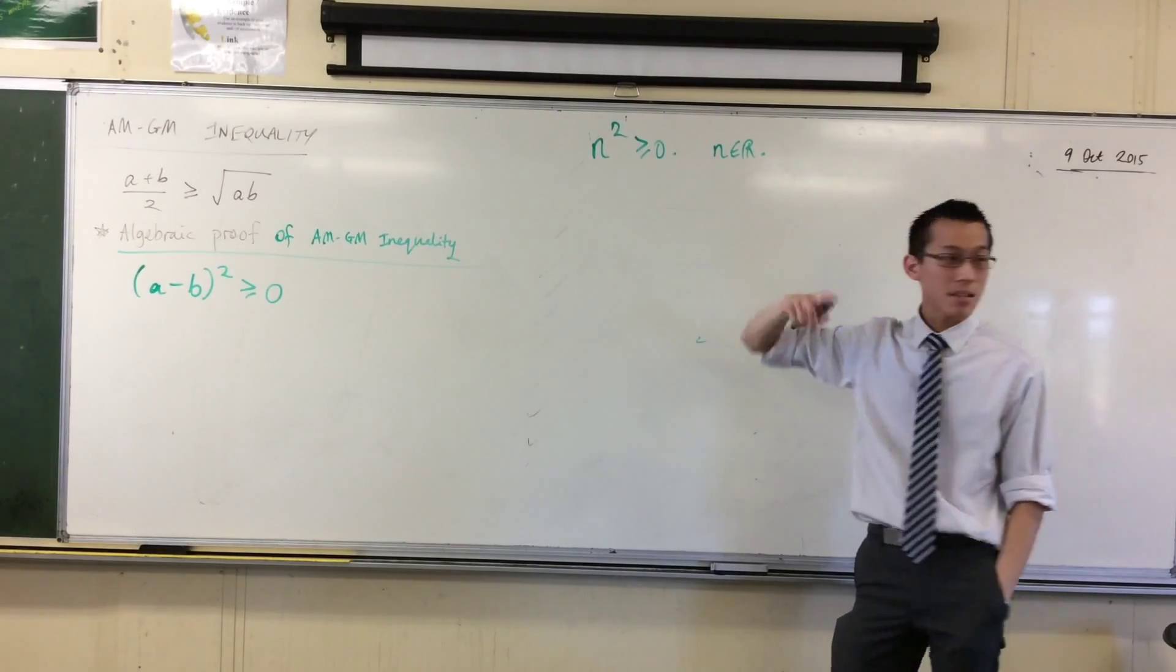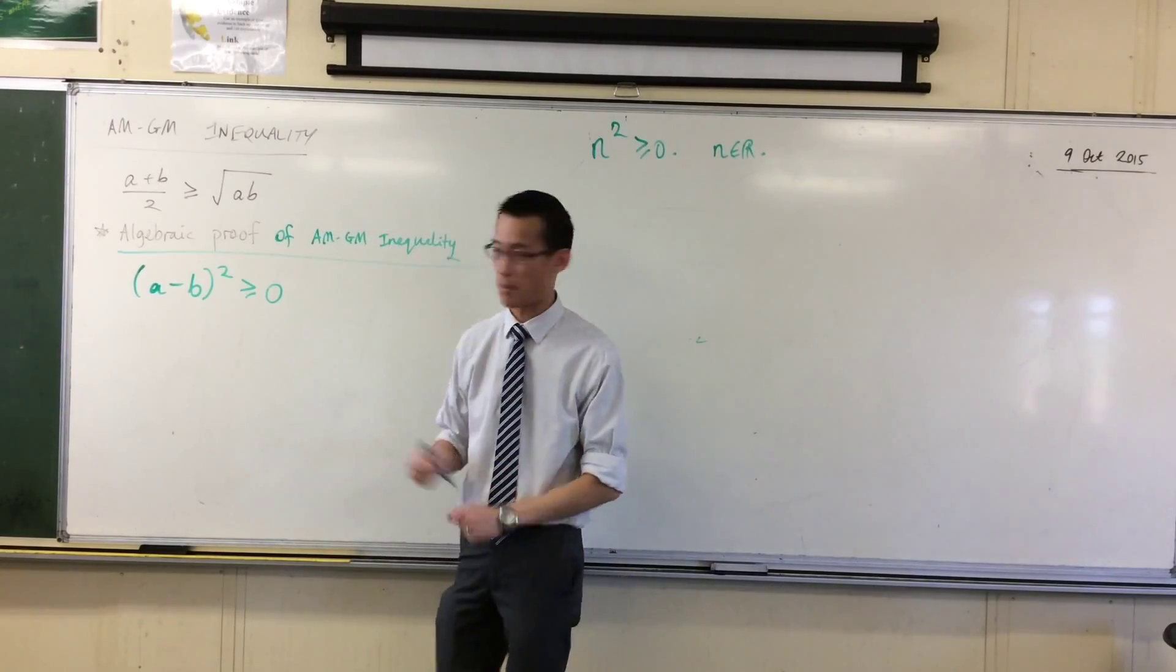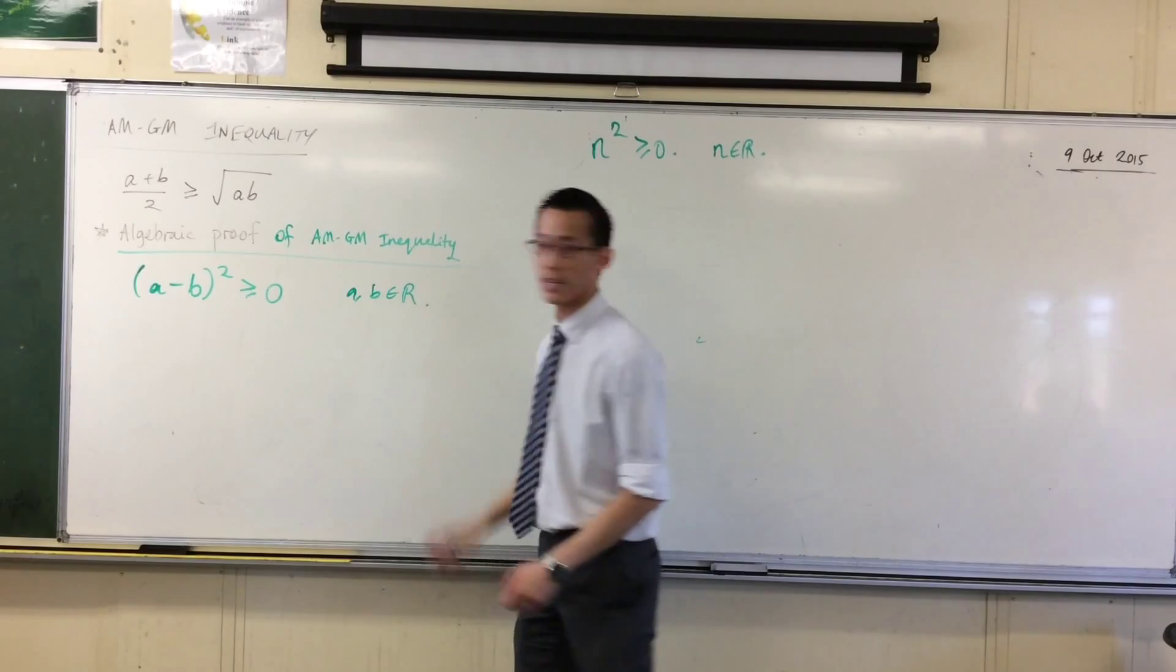this is true because this is true. Right? A and B, both real numbers, therefore, A take away B is also a real number. Okay? So I'm just going to put that over here. Okay?